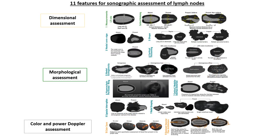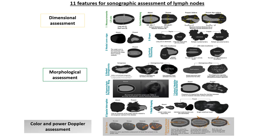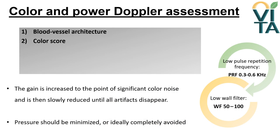The last part of the sonographic evaluation provides assessment of vascularization, comprising both description of blood vessel architecture and subjective quantification of blood flow — the so-called color score. When color or power Doppler ultrasound is used, pulse repetition frequency must be low, between 0.3 to 0.6 kHz. Similarly, the wall filter should be low, between 50 to 100. The gain is increased to the point of significant color noise and then slowly reduced until artifacts disappear.